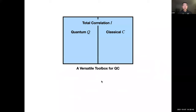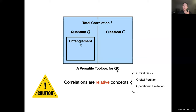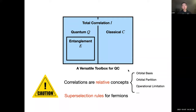We now have a comprehensive toolbox: total correlation measured by mutual information, separable into quantum and classical parts, with entanglement living within the quantum part. Before applying these concepts to quantum chemistry, a key caveat is that correlations — classical, quantum, or entanglement — are all relative concepts. They depend on the orbital basis you choose, how you partition those orbitals, and what operations you can perform locally.